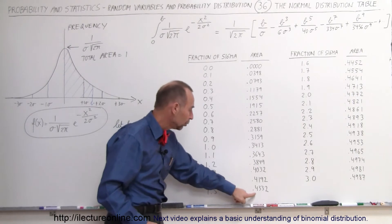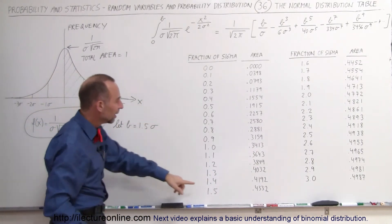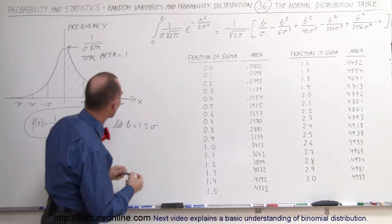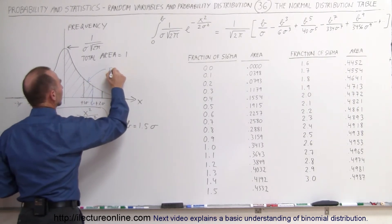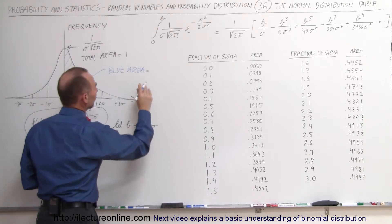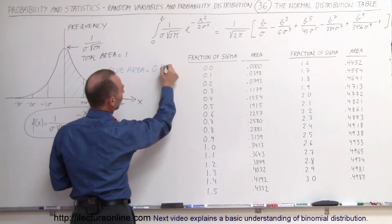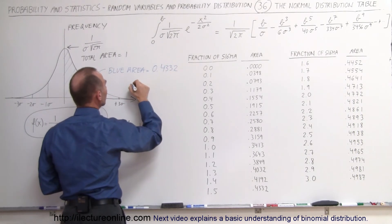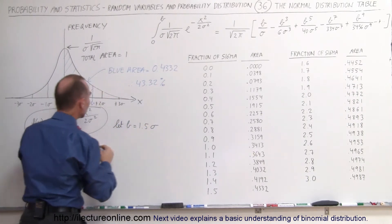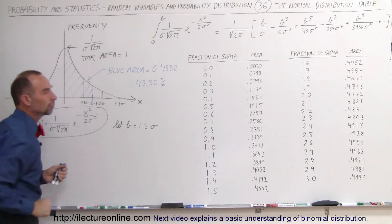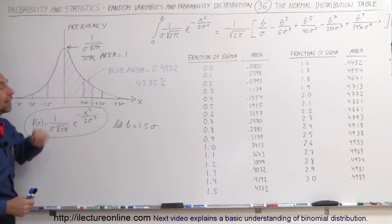That means that the total area of the blue region from 0 to b equal to 1.5 sigma is equal to 0.4332. In other words, this blue area is equal to 0.4332 relative to 1 being the whole area, which means 43.32 percent of the total area falls within 0 and b equals 1.5 sigma. And that's how we figure out what the relative area is underneath the normalized curve.